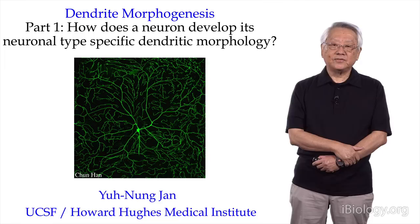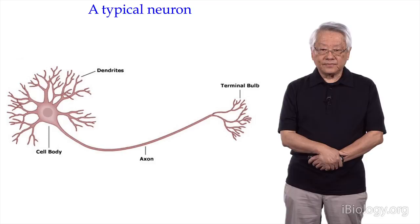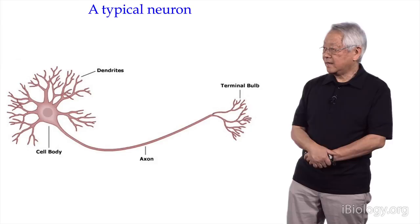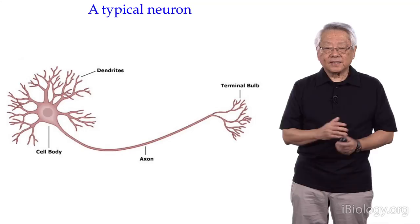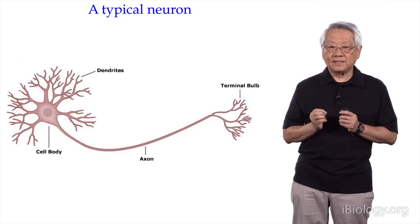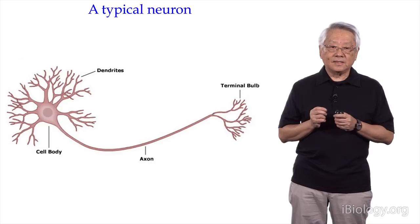Today I would like to discuss dendrite morphogenesis. Our brain has billions of neurons, and a typical neuron has three major compartments. They are the dendrites. This word is derived from the Greek word dendron, meaning tree. These are the tree-like structures. Dendrites are used by neurons to receive signals. The signal could be a sensory stimuli such as light or heat, or it could be a synaptic input.